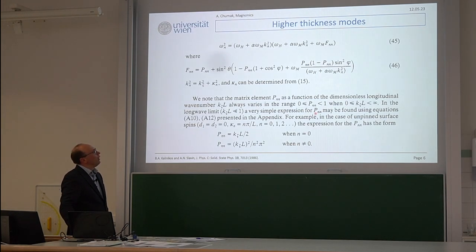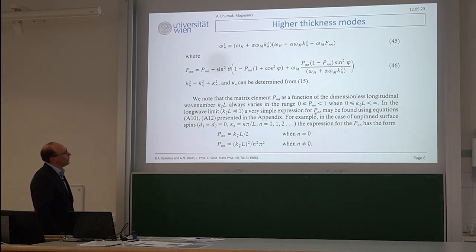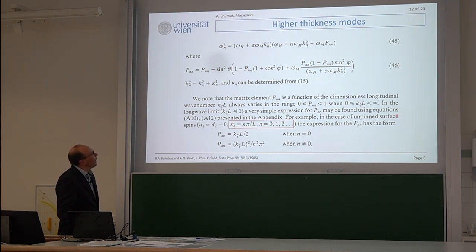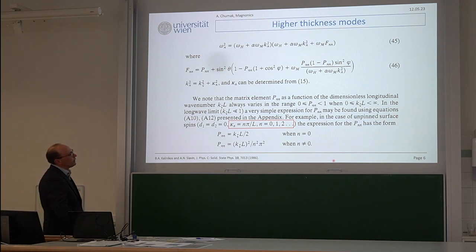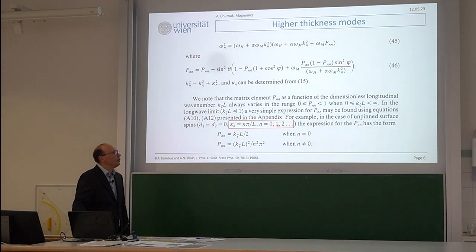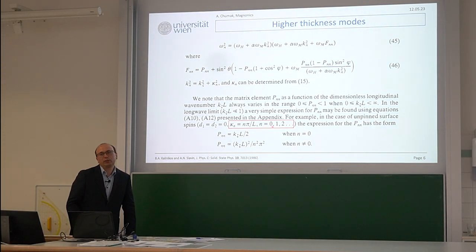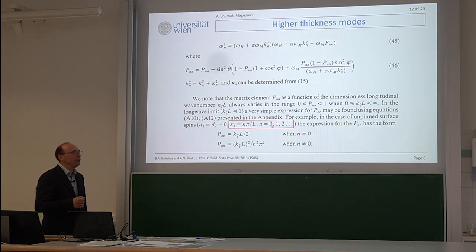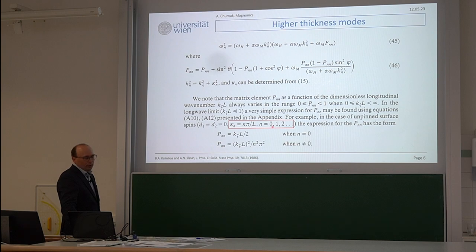These are the formulas you need to use — there was a lot of mathematics involved. Kappa_N is the quantization over the thickness: it's pi over L, where L is the thickness of the film and N is an integer starting from 0, 1, 2. If N equals 0, it means the lowest thickness mode, where magnetization over the thickness is uniform.